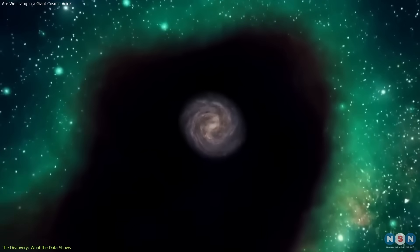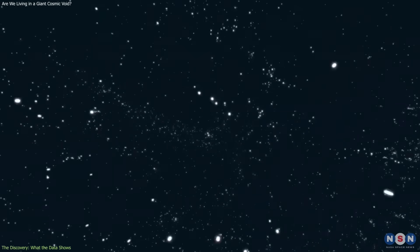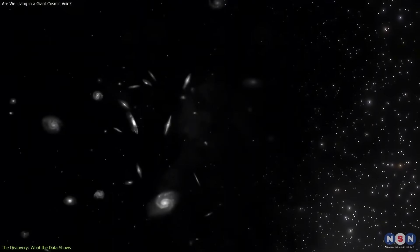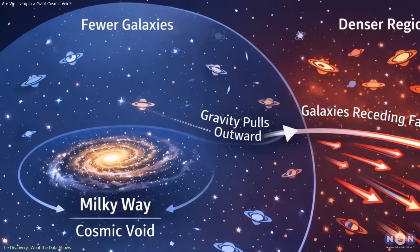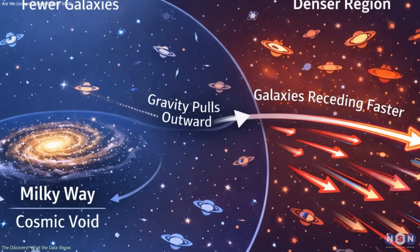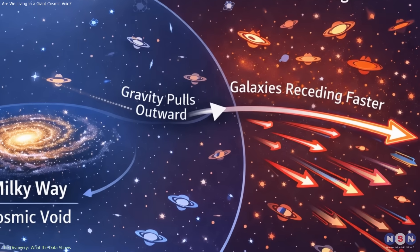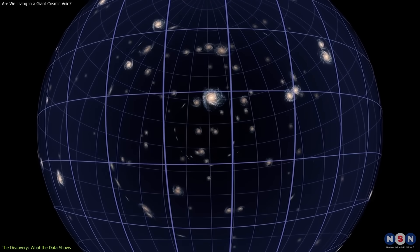If our region of the universe contains less matter than average, gravitational forces would cause matter to flow outward toward surrounding denser regions. That motion subtly alters the way distances are measured and how light propagates through space. To an observer inside such an underdense region, nearby galaxies can appear to recede faster than expected, even if the universe as a whole follows the standard expansion history.